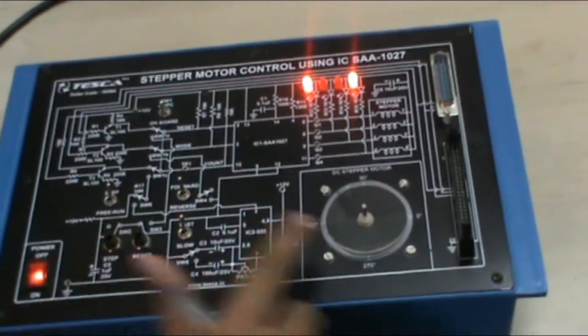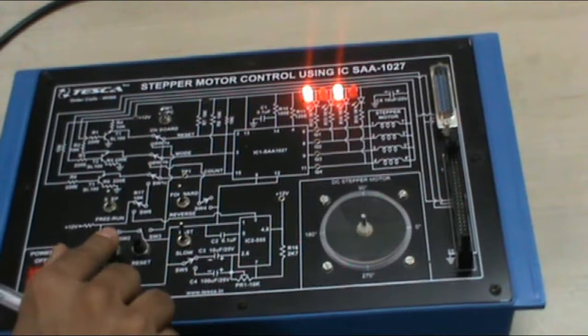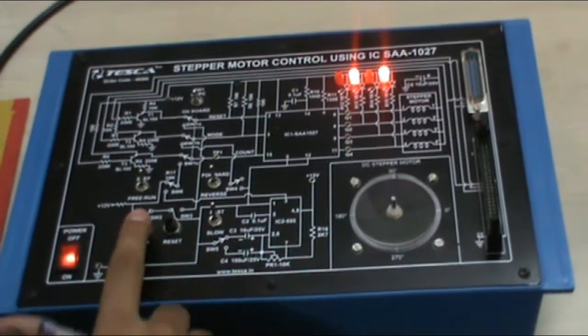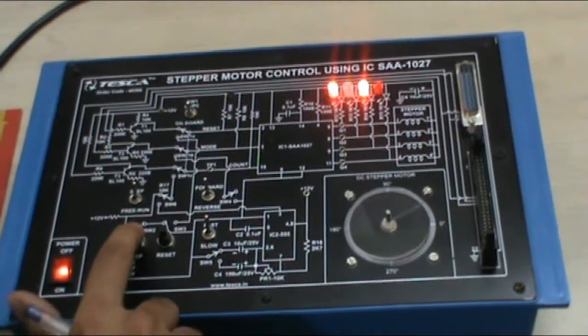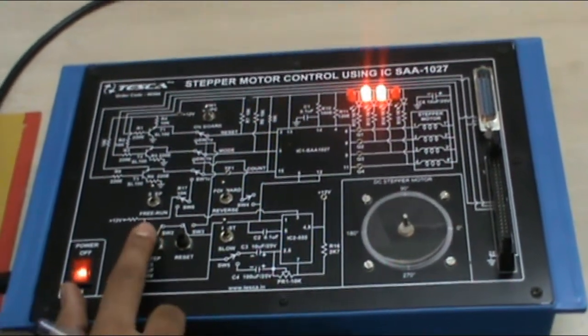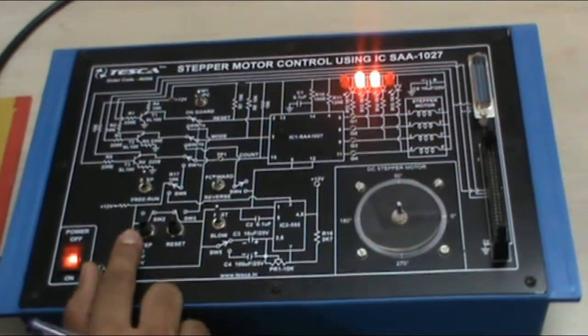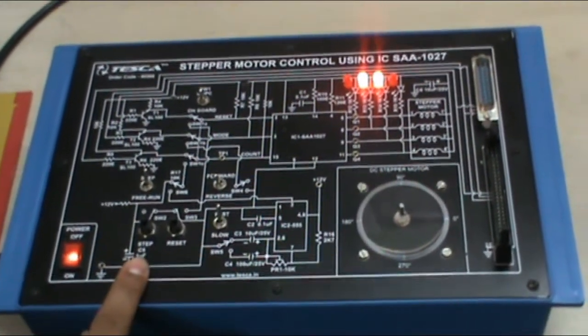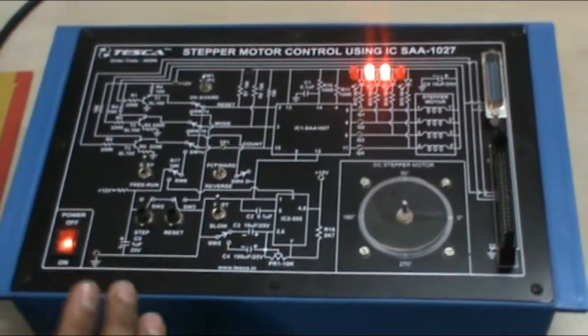Now make this motor to zero position where indicating is zero. Bring this motor to that position. Now through this position, take 8 steps forward and 8 steps reverse.